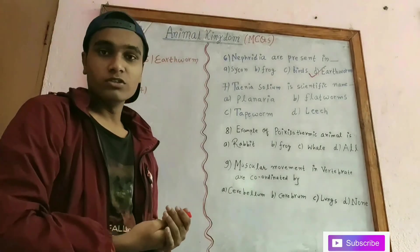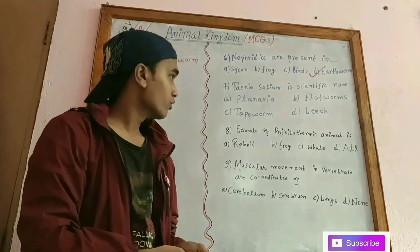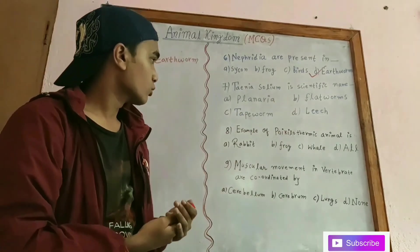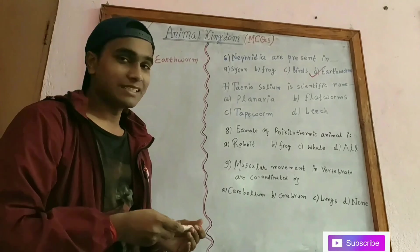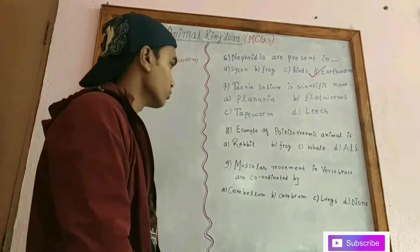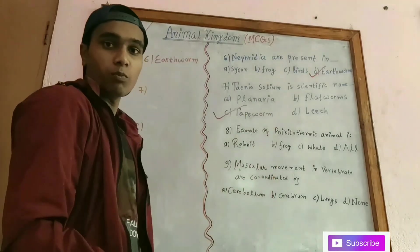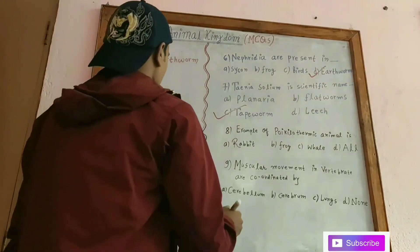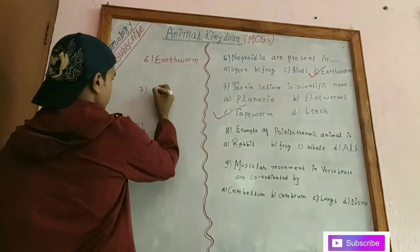In question number 7, Taenia solium is the scientific name for which organism? Options include Planaria, Platyhelminthes, tapeworm, and lice. Taenia solium is the scientific name for tapeworm. Therefore, tapeworm is the answer.